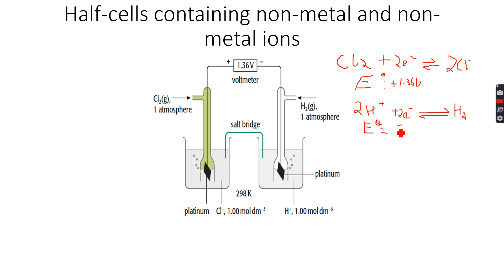So again, this one is smaller because +1.36 is greater than 0. So as +1.36 is greater than 0, we'll have to reverse this. This will be H2 gives 2H+ plus 2e- negative.